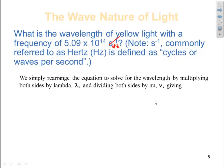We simply rearrange the equation to solve for the wavelength by multiplying both sides by lambda and dividing both sides by nu. We're taking our equation that we memorized, frequency equals the speed of light divided by lambda, and rearranging it. In this case, wavelength equals the speed of light divided by nu.